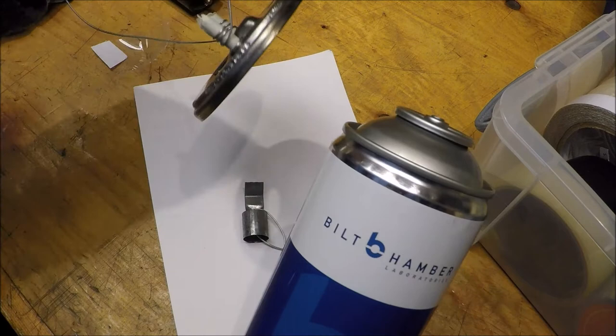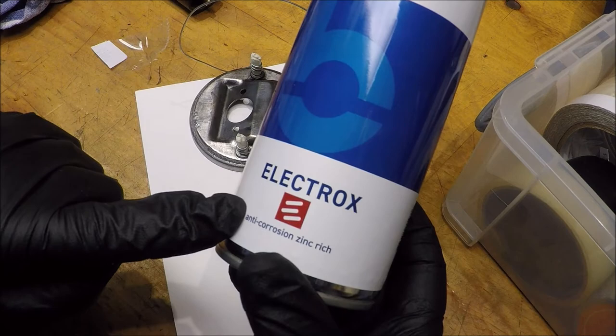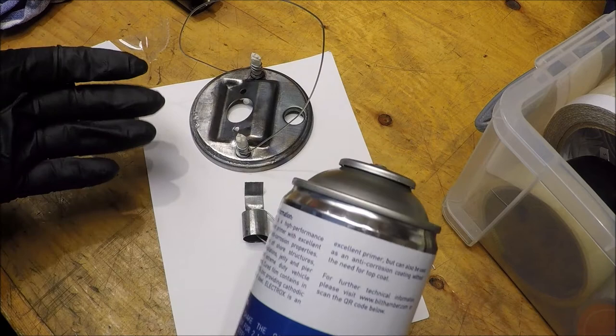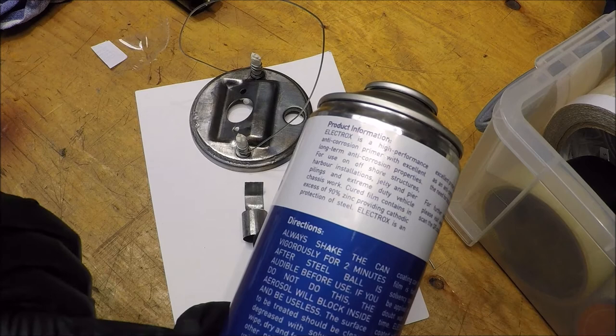I'm going to paint it with this Electrox anti-corrosion zinc-rich paint. I've got to do this outside, so I'll do it outside, hang it up to dry. It says to apply a second coat after two hours but before three hours. I'll do that and show you the results at the end.